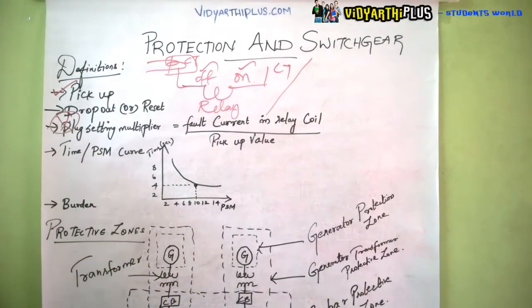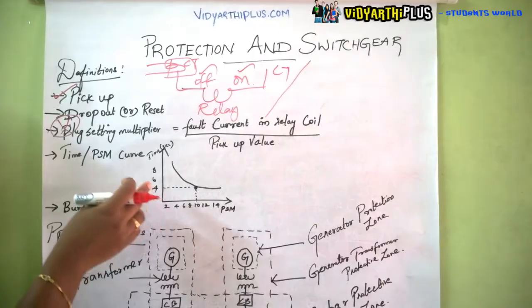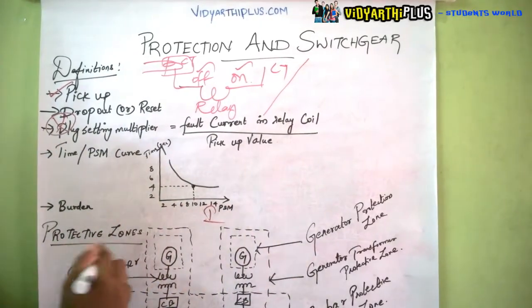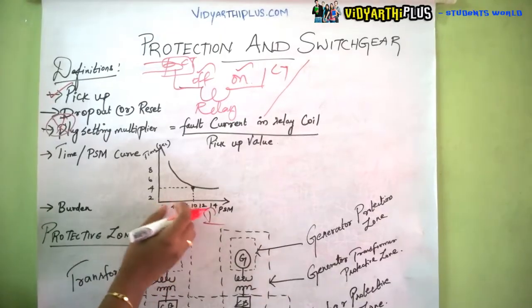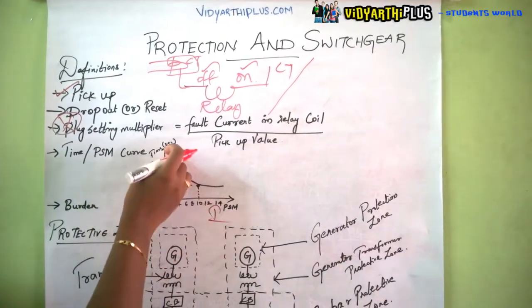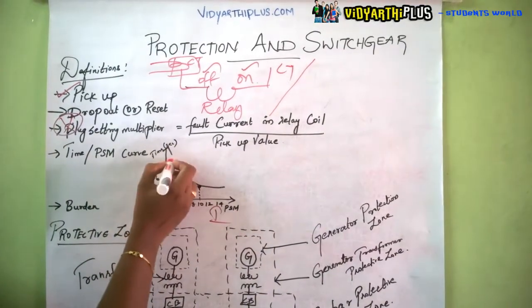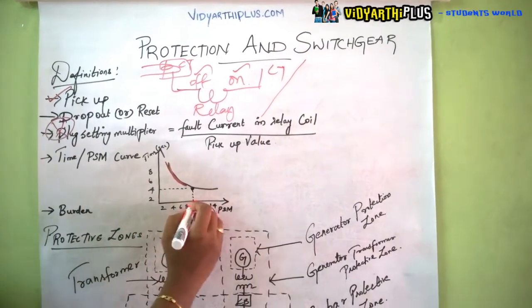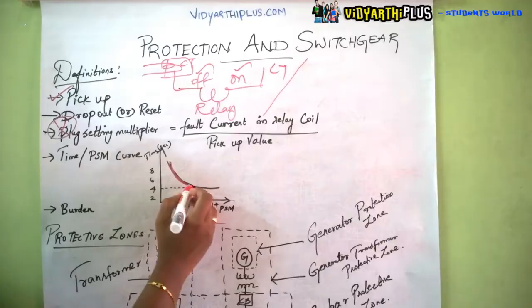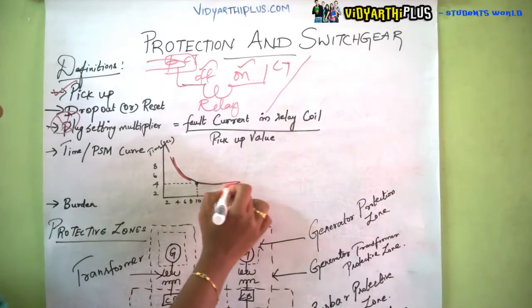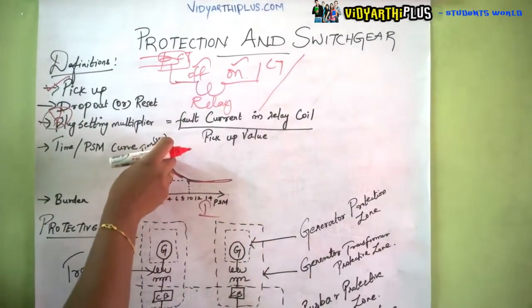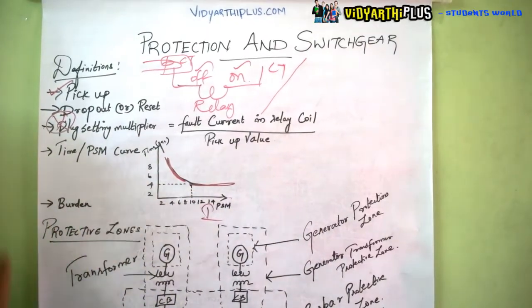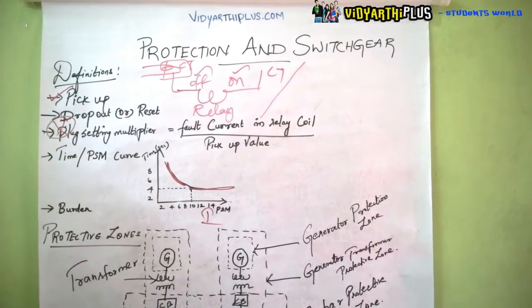Next is the time versus PSM curve, which is drawn between time and current. In the initial stage, time and current are inversely proportional. As the current increases, the time becomes constant. So first it is inversely proportional, and finally it becomes constant — this is the time/PSM curve.